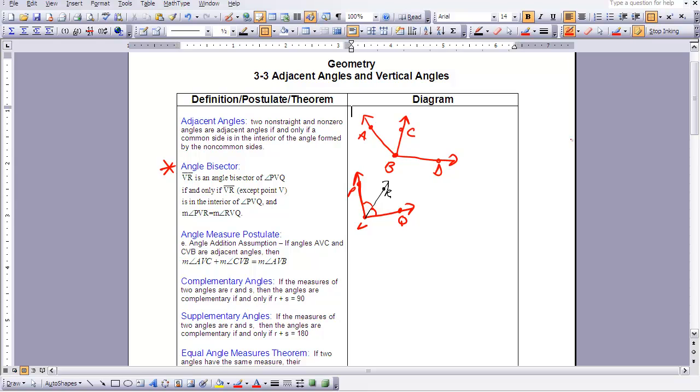So I know that these two are equal. And this bisector is on the interior of the angle that I'm bisecting. And so we say that VR is our angle bisector of angle PVQ.